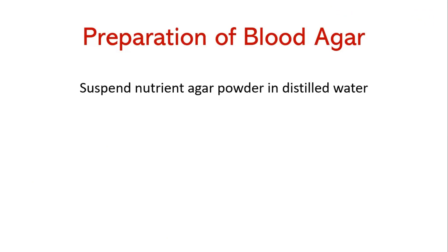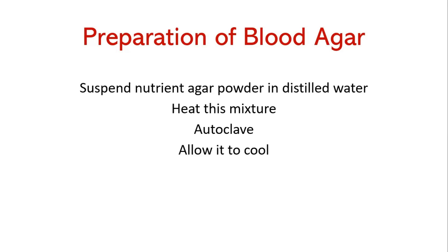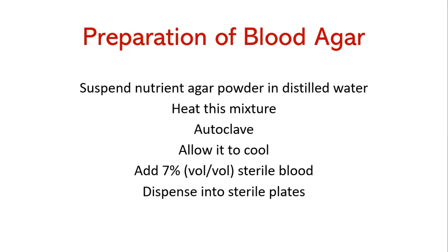For the preparation of blood agar, nutrient agar powder is suspended in distilled water, heated while stirring, then autoclaved at 121°C for 15 minutes. When the agar has cooled to 45–50°C, add 7% volume-by-volume sterile defibrinated blood that has been warmed to room temperature and mix gently. Avoid the formation of air bubbles and dispense into sterile plates while in liquid state.